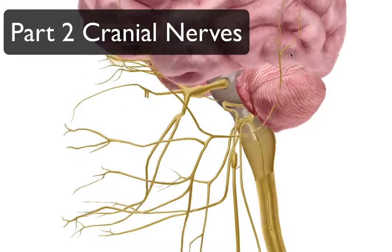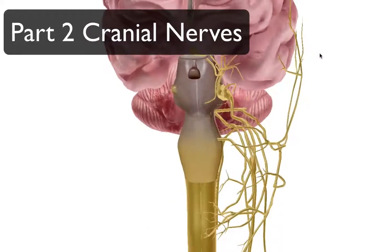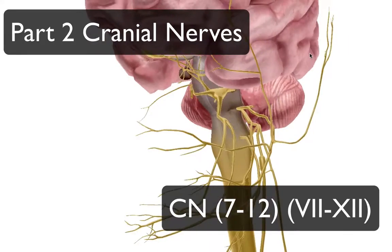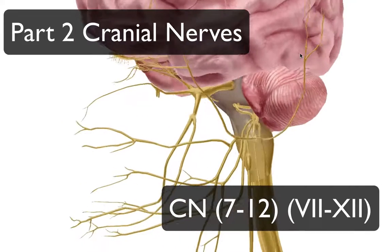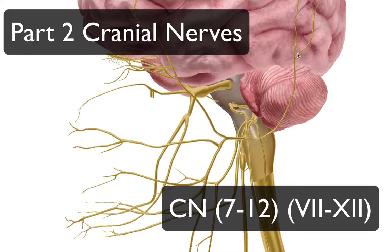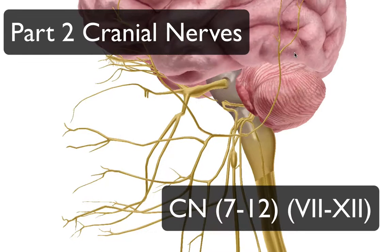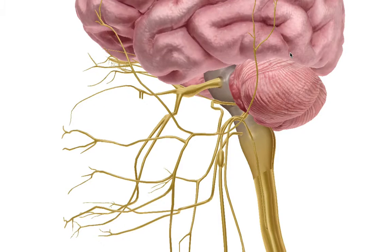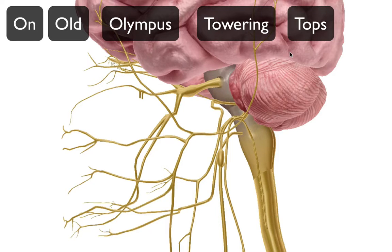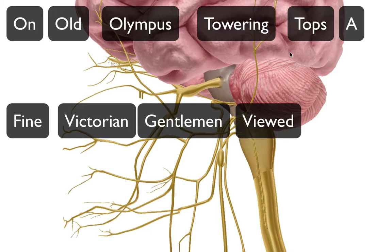This is part two of the cranial nerves; we'll be discussing the remainder of the 12 nerves. On the last video we finished on cranial nerve number six, the abducens. This one we continue with the facial nerve, cranial nerve number seven. The mnemonic we're using is: 'On Old Olympus' Towering Tops, A Fine Victorian Gentleman Viewed A Hawk.'